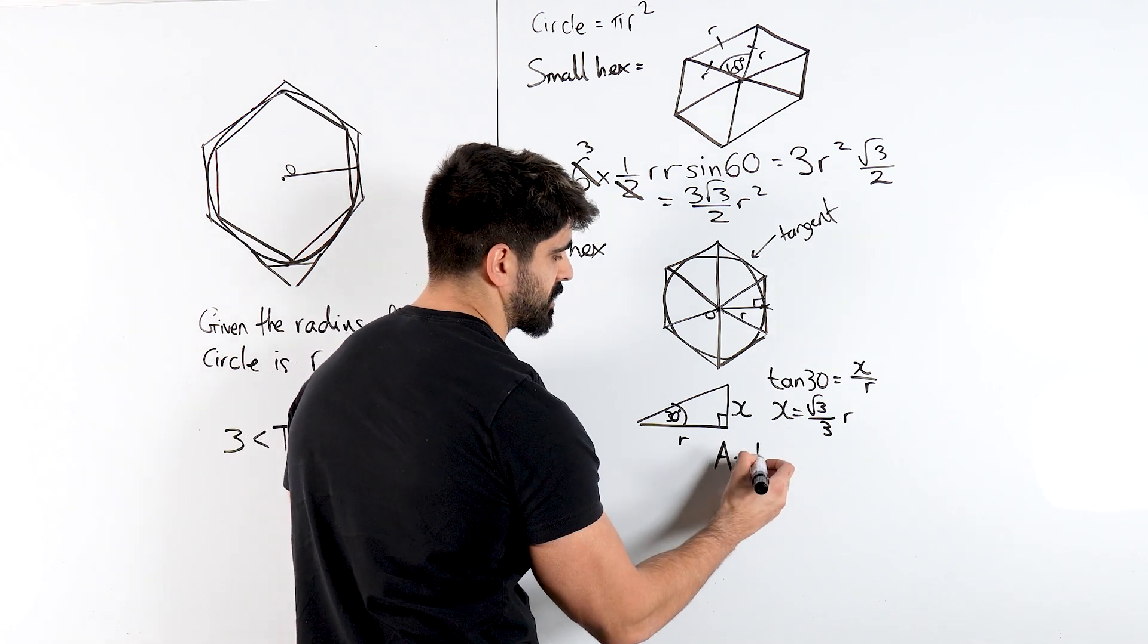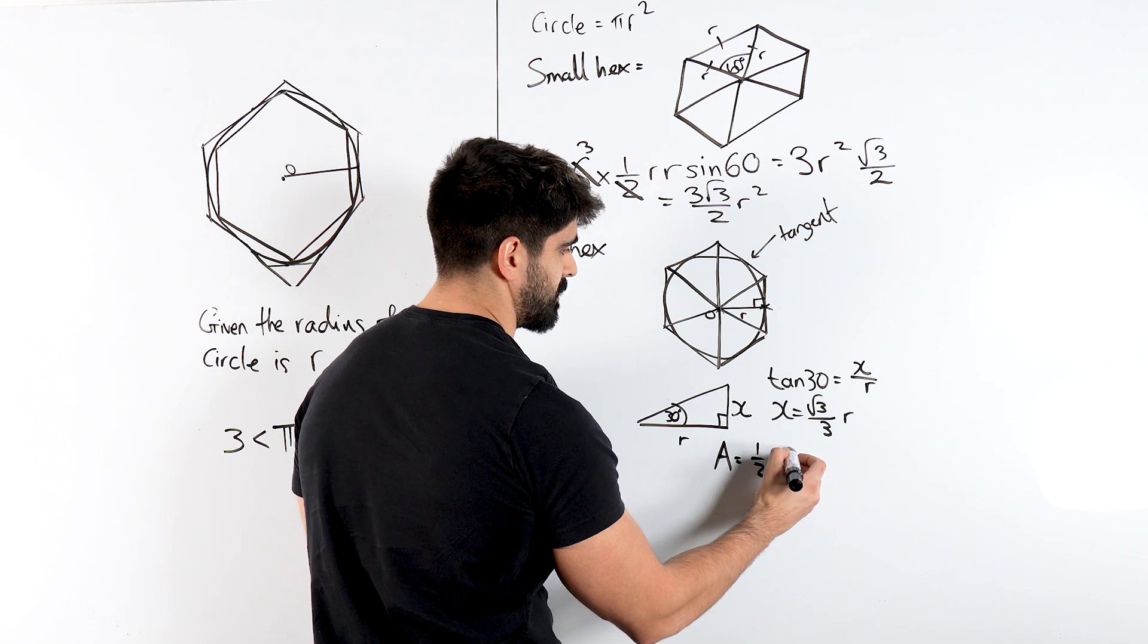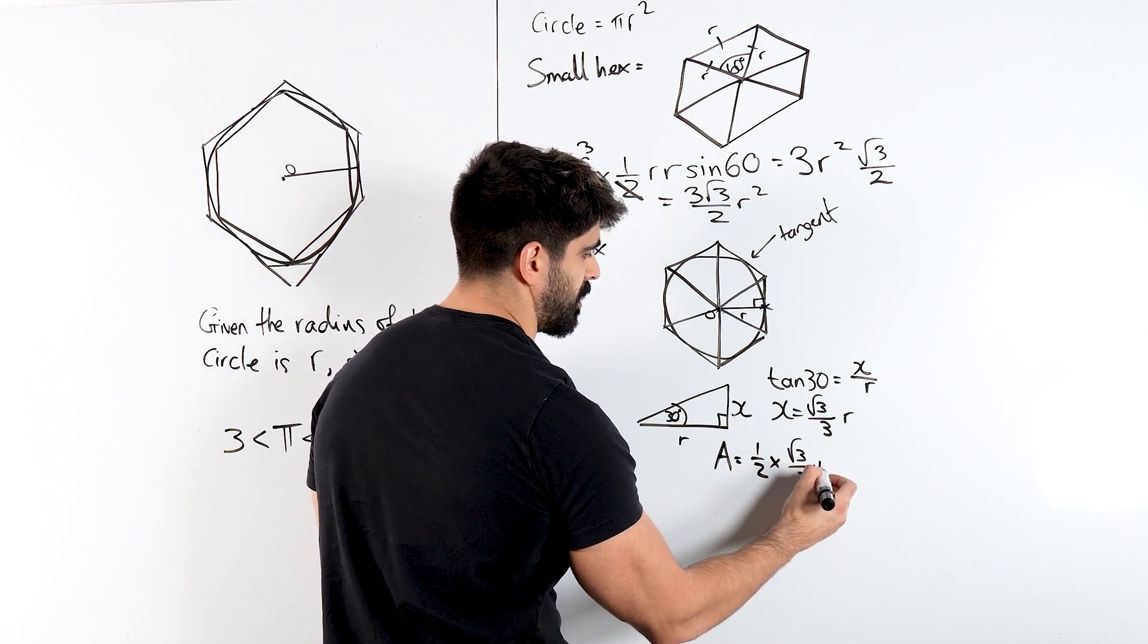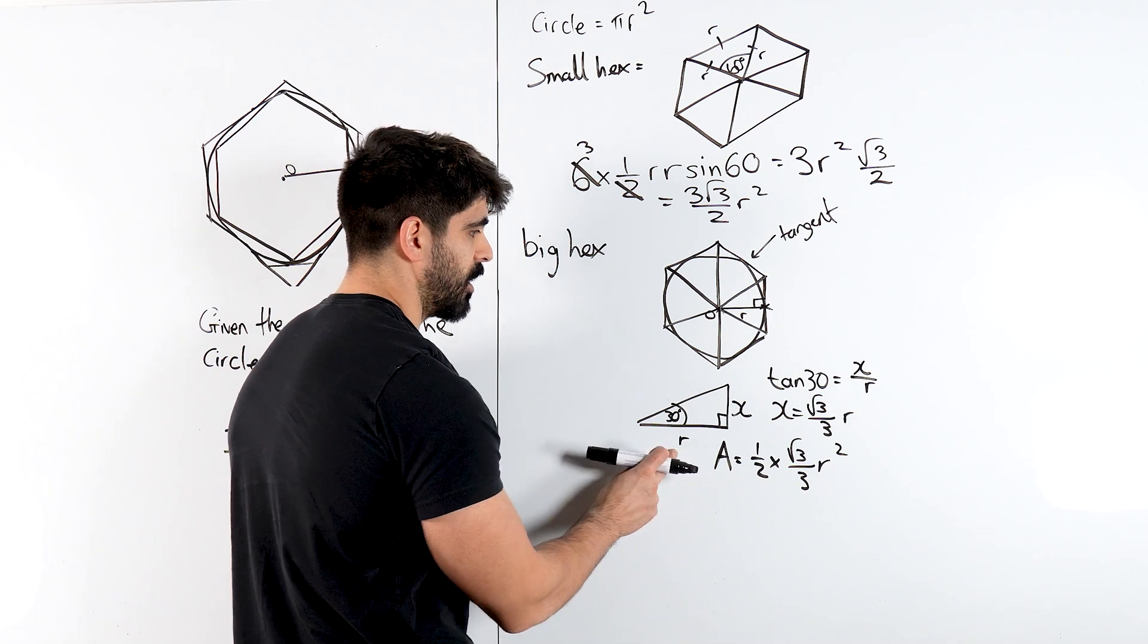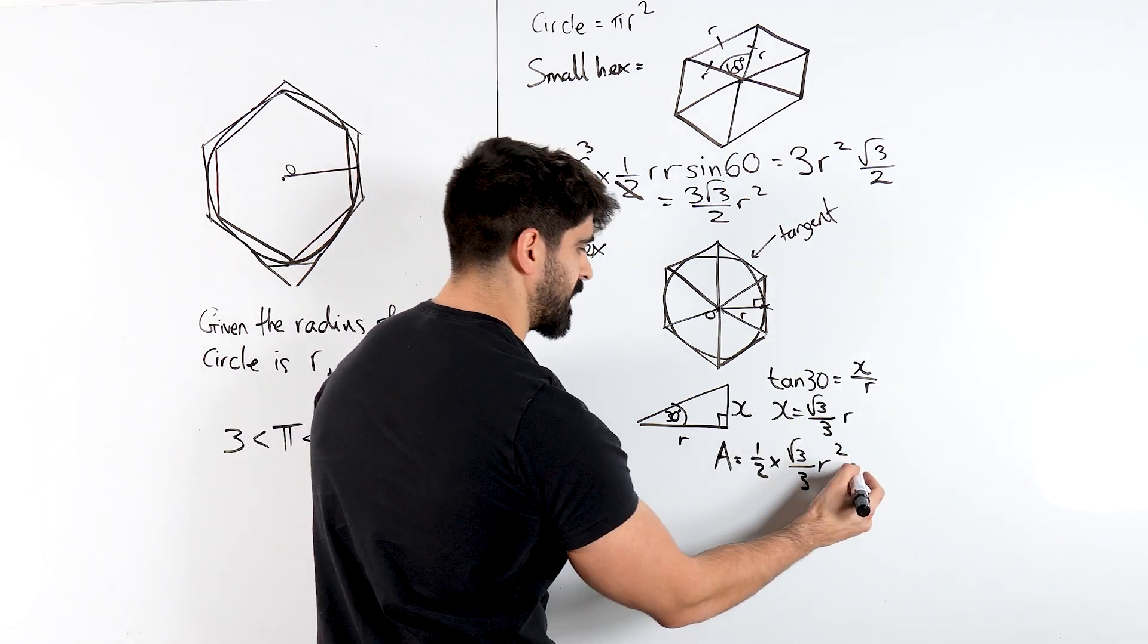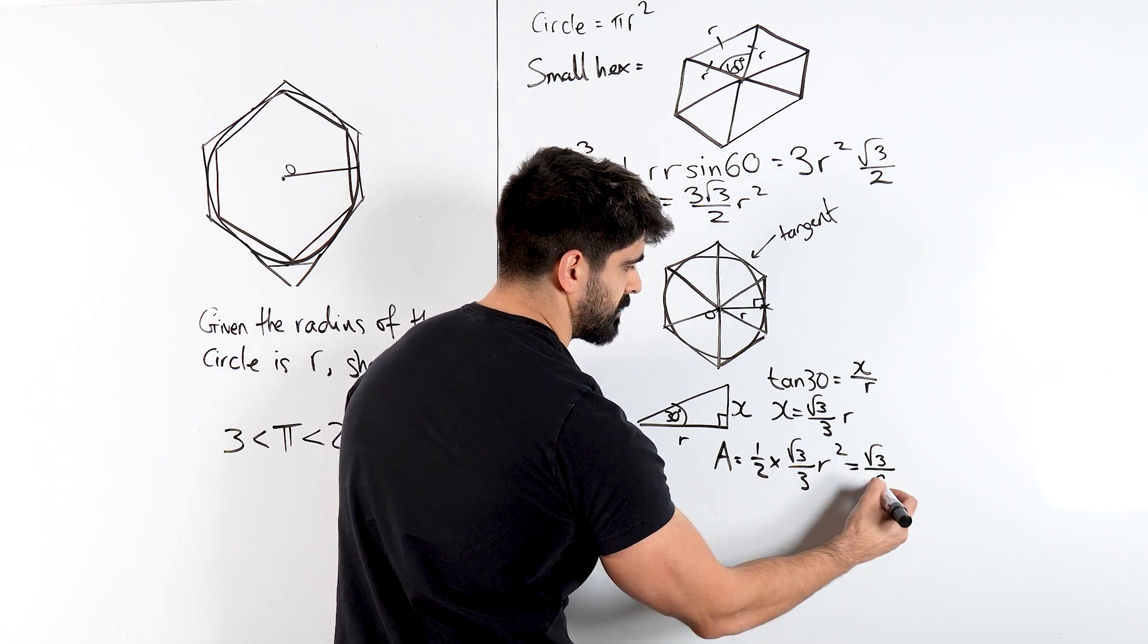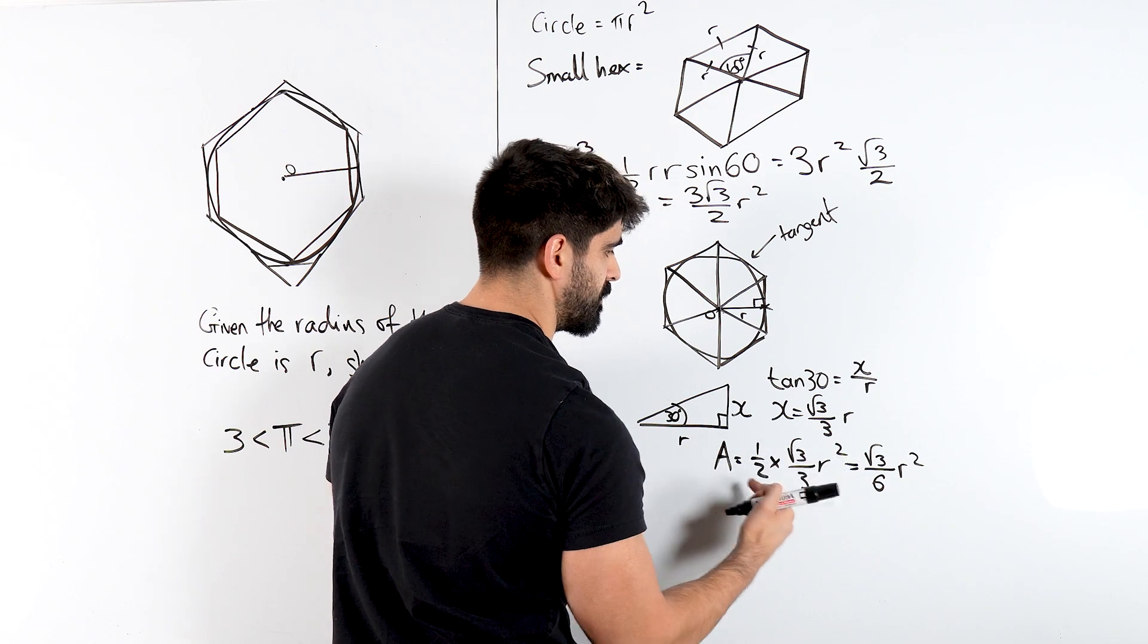So my area of the mini triangle is a half times the base length of r times the height. So root 3 over 3 r squared. R times this. R times r gives me r squared. So altogether we have root 3 over 6 r squared.